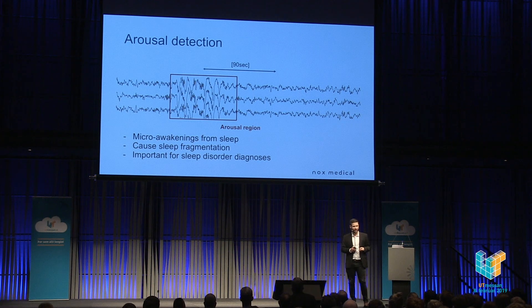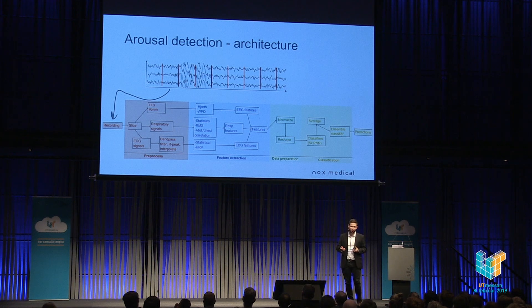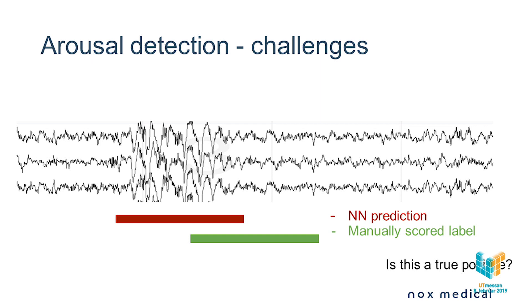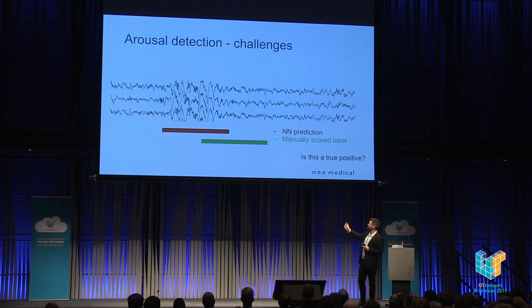Arousals cause what's called sleep fragmentation, and they're very important for the analysis of many sleep disorders. We applied machine learning to automate this. We take a 90-second chunk, split it into 10-second epochs, calculate features, and feed them into a recurrent neural network that predicts whether each 10-second interval is an arousal period or not. One challenge was that when a human labels events, they only want to count events — they care about roughly when and how many. So the neural network predicted the arousal accurately, but the human label — our target — was slightly off, creating noisy training data.